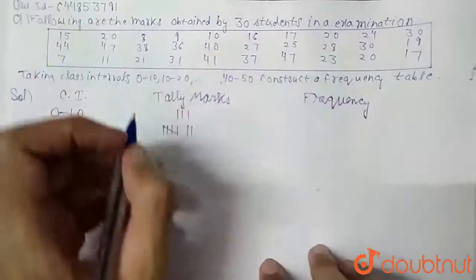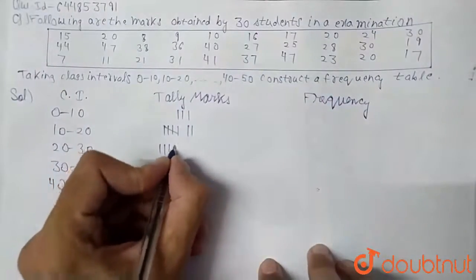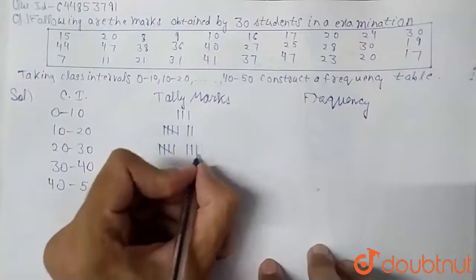Then if we check in 20 to 30, we have 9 values here, so 1, 2, 3, 4, 5, 6, 7, 8, 9.